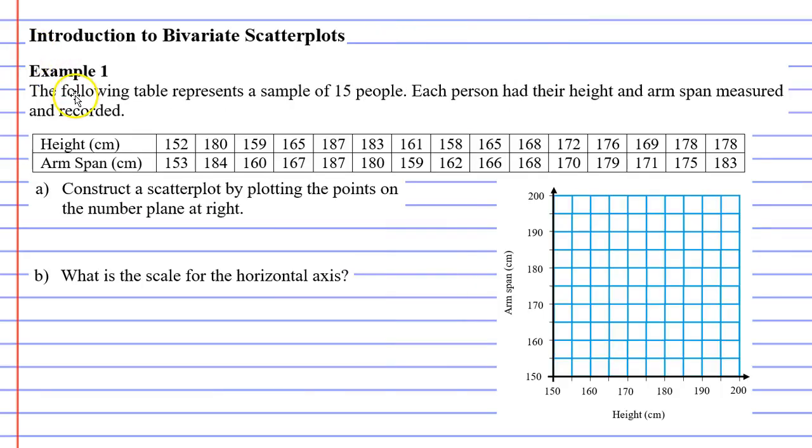For example 1, the following table represents a sample of 15 people. Each person had their height and arm span measured and recorded. Question A says, construct a scatter plot by plotting the points on the number plane at right. You'll notice that our height is on the horizontal axis, and our arm span is the vertical axis.